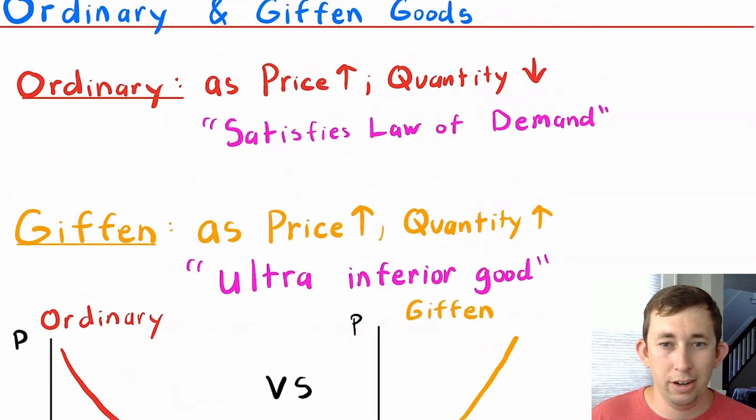Those are normal and inferior goods, and we'll cover those in a separate video. But hopefully this gives you a little better idea of the difference between ordinary and Giffen goods and how to tell whether a good is ordinary or Giffen.